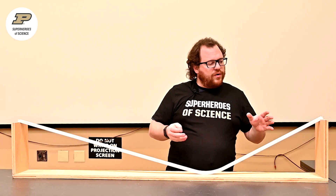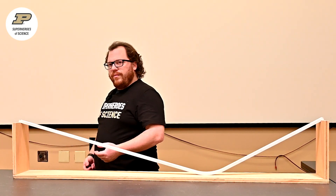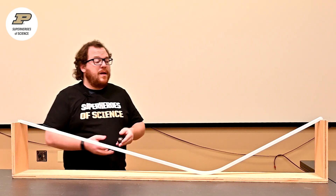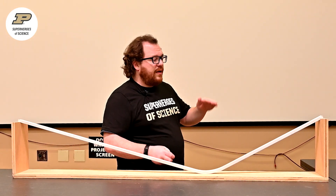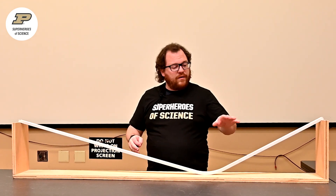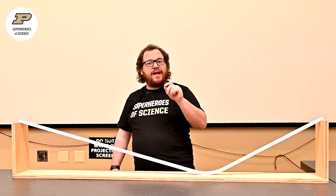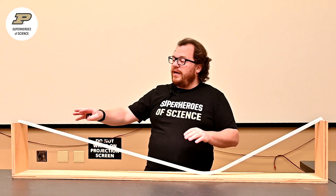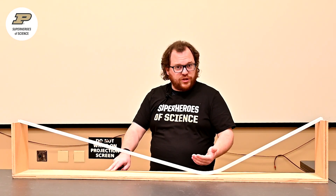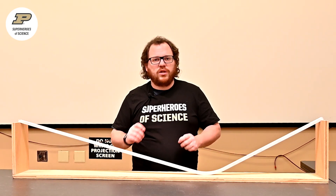So what he was noticing was that it didn't seem to depend on where he released it — it would always return to almost the same height. The only thing he could find that would get it closer to perfect was smoothing out the track. If he smoothed the track out, he would get closer and closer to that original height on the other side of the ramps, causing him to come up with ideas about friction and the presence of friction, thinking there must be something slowing this down.